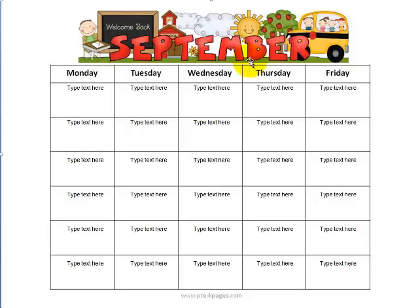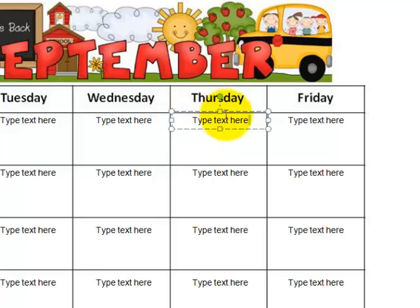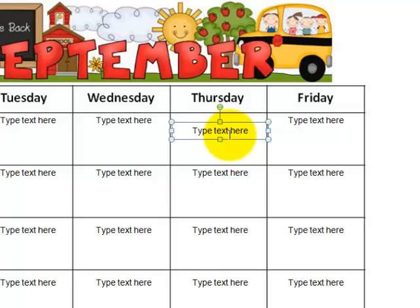You're not able to edit the header up here at the top, and you're not able to edit the size of the boxes. But you can edit the text where it says 'type text here.' When you click inside the box and the lines are dashed, that means it's ready for editing. If you click on the outside of the box and the lines are solid, you can move that text around.